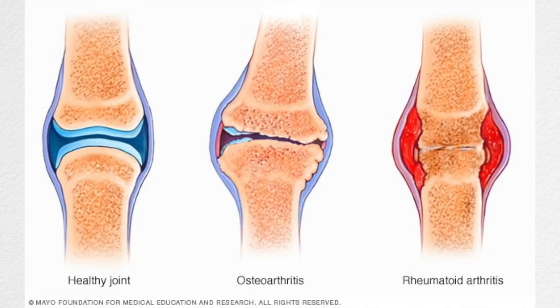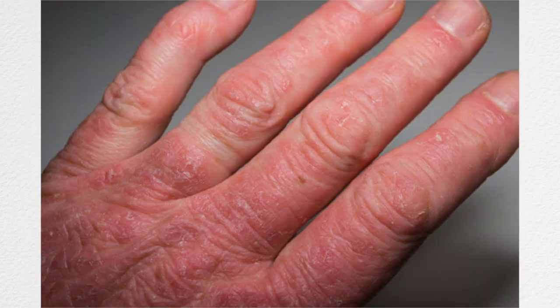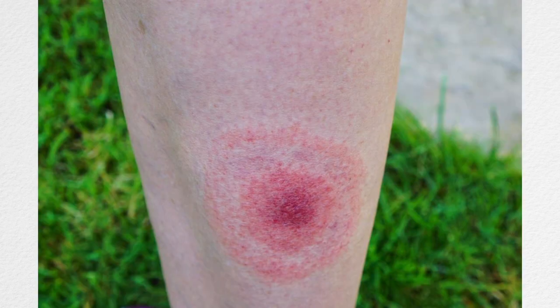The most common condition that you've probably heard of is arthritis. Arthritis is when joints sadly wear down and have symptoms such as joint stiffness and severe pain. Factors such as age, injuries, and other medical conditions play a role in developing arthritis. Additionally, Lyme disease is known to lead to arthritis. Let me know if you guys want a video on Lyme disease.